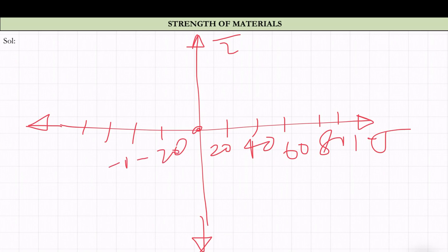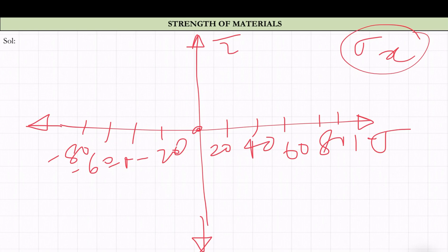We mark values like minus 40, minus 60, minus 80 and so on. First we draw sigma_x, which is given as minus 50, so it is plotted here. Secondly, sigma_y is 100, so at 20, 40, 60, 80, and 100 we mark that point. These are sigma_x and sigma_y plotted on the sigma axis.